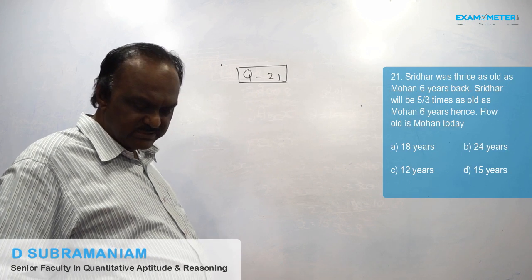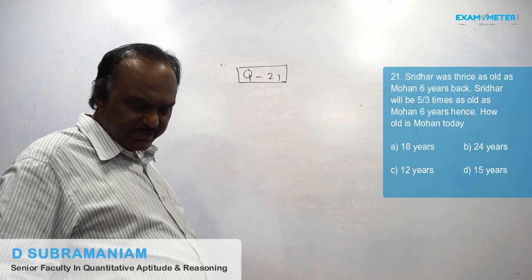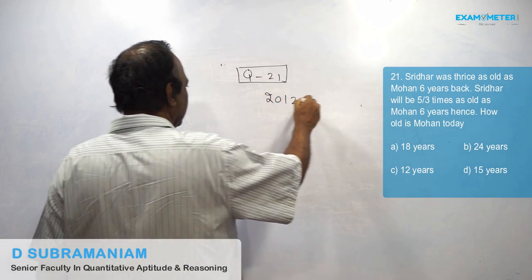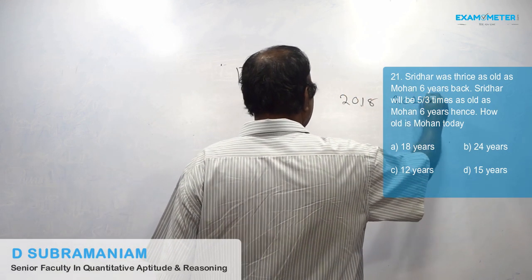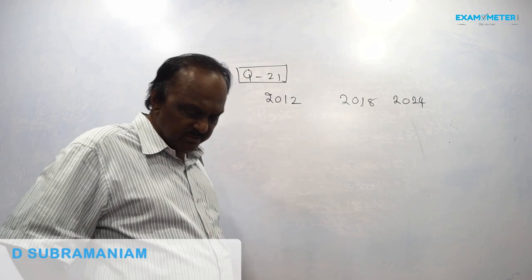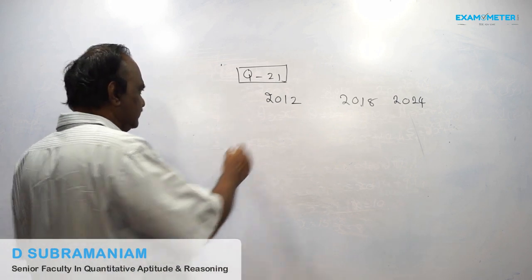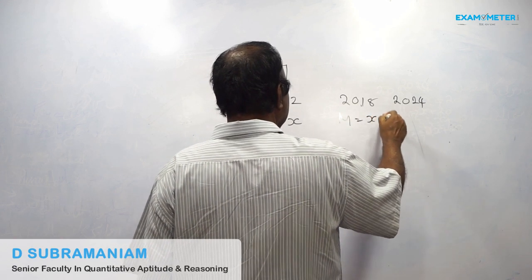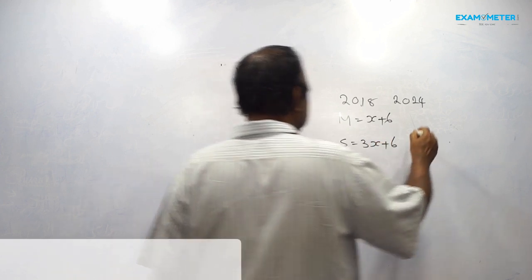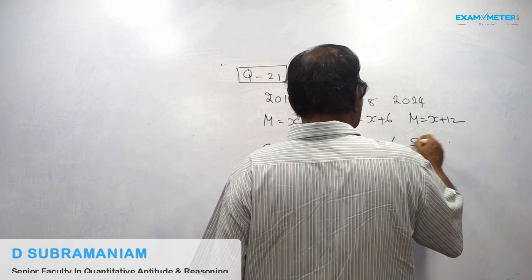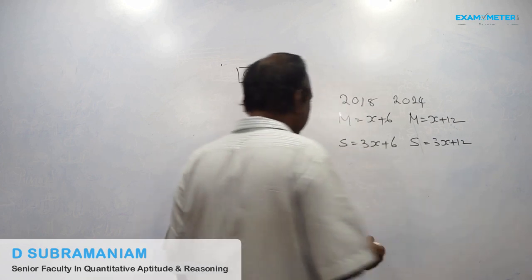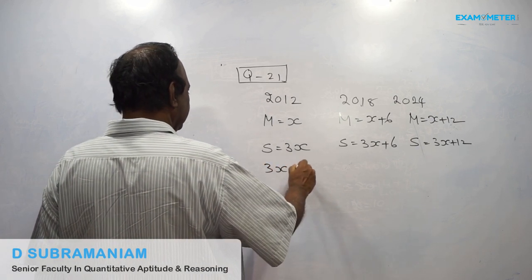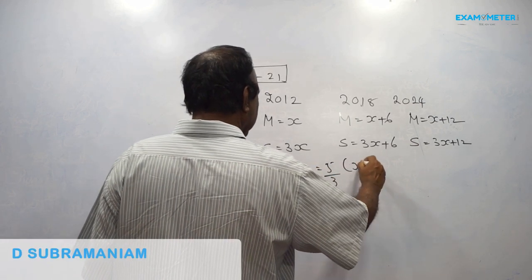Sridhar was thrice as old as Mohan 6 years back. Sridhar will be 5/3 times as old as Mohan 6 years hence. How old is Mohan today? 6 years ago: Mohan is x, Sridhar is 3x. Now: Mohan is x plus 6, Sridhar is 3x plus 6. After 6 years: Mohan is x plus 12, Sridhar is 3x plus 12. So 3x plus 12 is equal to 5/3 into x plus 12.